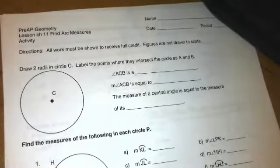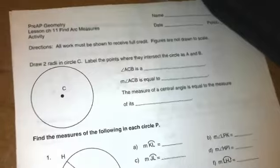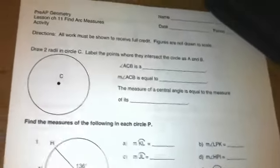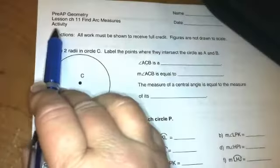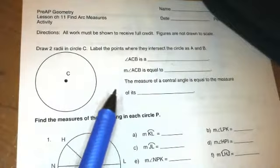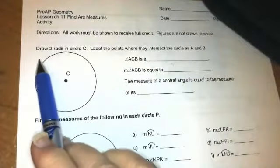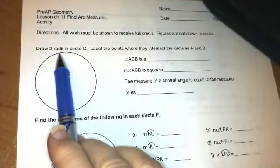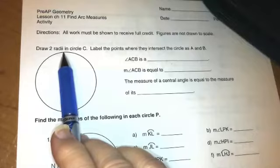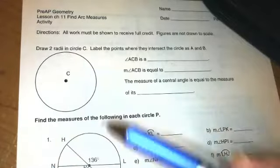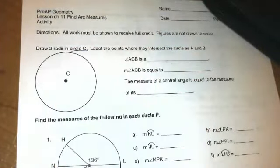Hey everybody, today's lesson is on central angles and arcs and we're working with the page that says activity on it. It's going to be our notes and our practice. So the first thing we're going to do is draw two radii, that's plural for radius, in circle C.